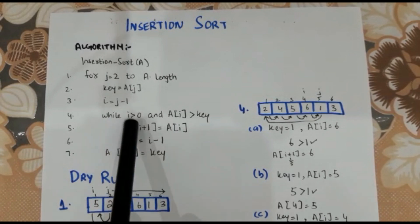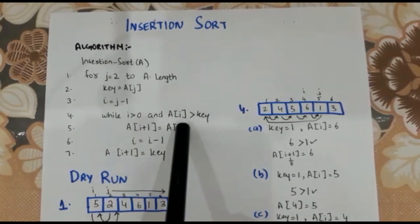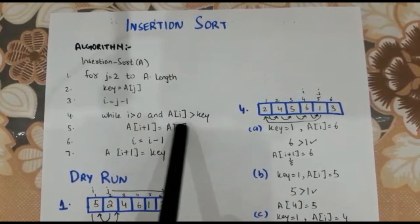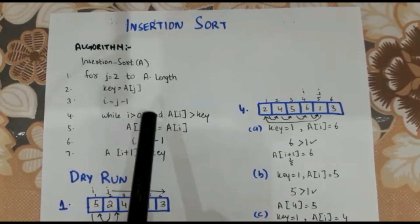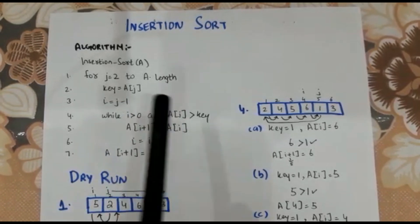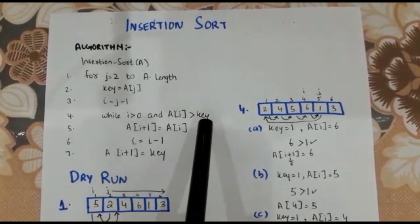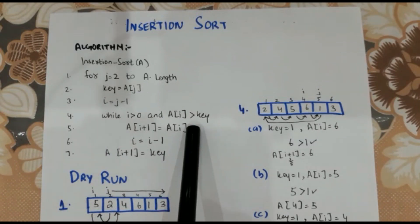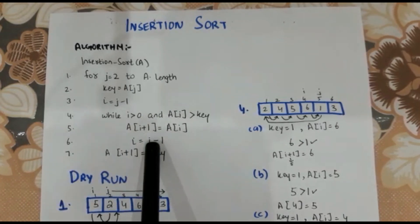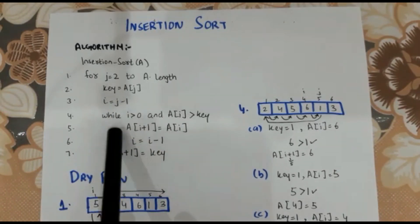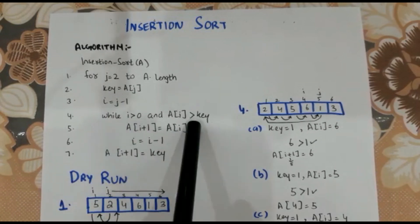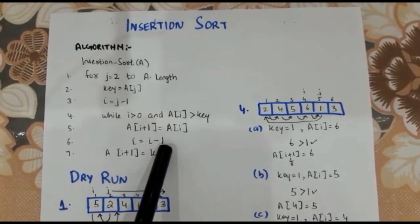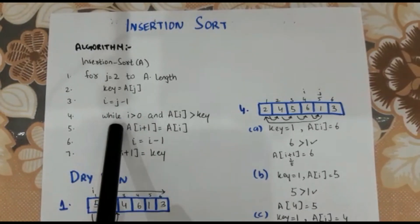Then our while loop will start. The while loop has this condition: if index i is greater than 0, and the array at index i is greater than key. The AND operator means both conditions must be true. If either condition is false, we will not execute the while loop body and will move to the last statement of the algorithm.